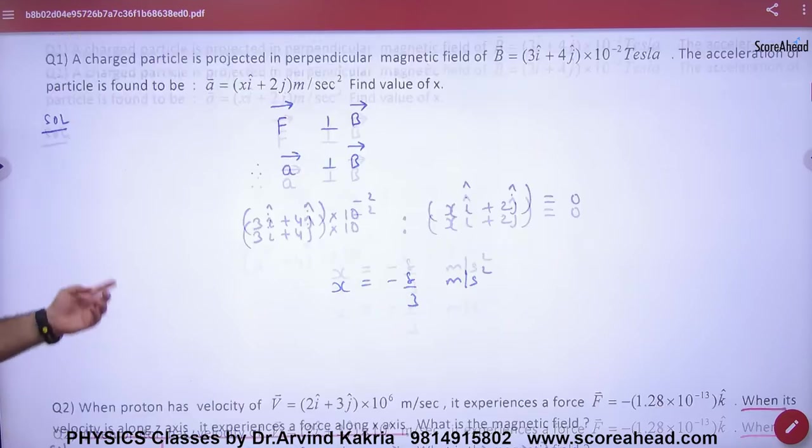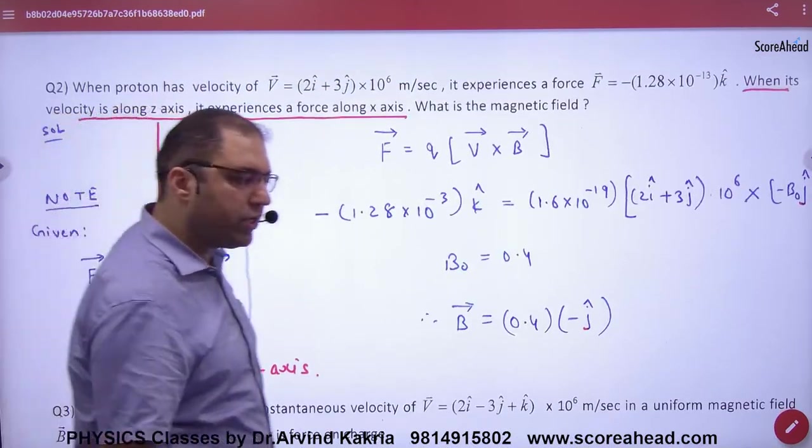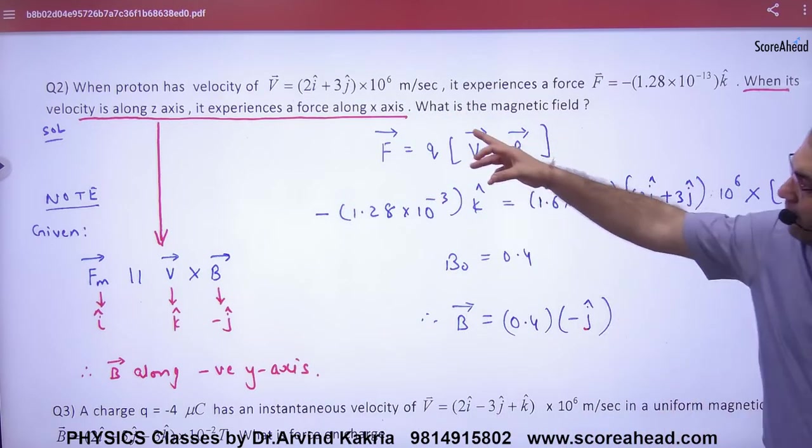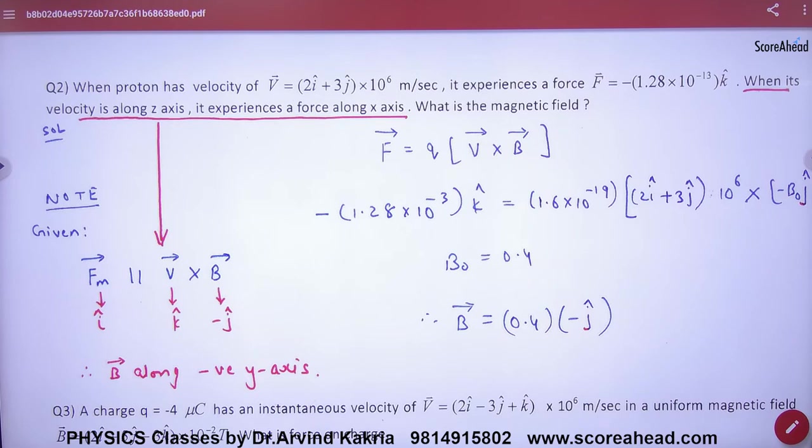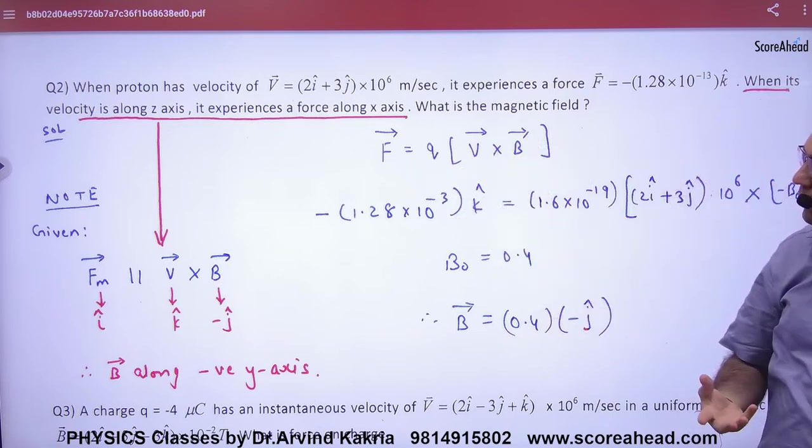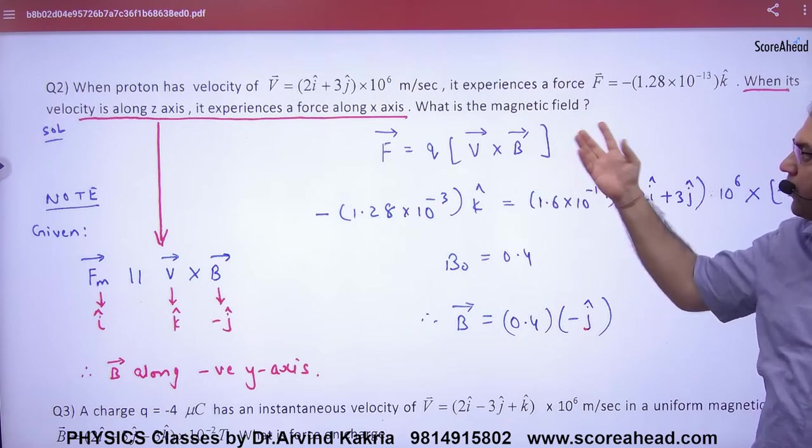Okay, like this is a question. Now, this is a tricky question for your attention. This question is: When a proton has a velocity of V vector, it experiences a force of F vector. When its velocity is along Z axis, it experiences force along X axis. So, how much is the magnetic field?